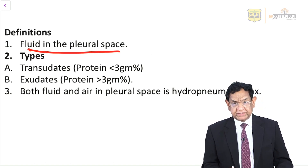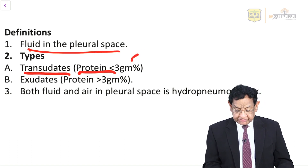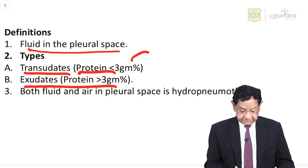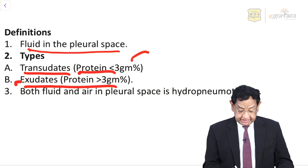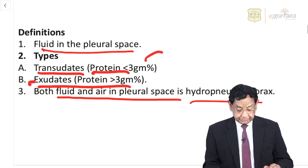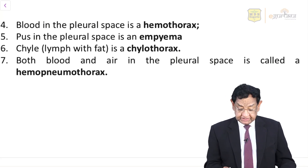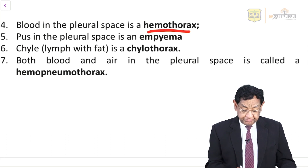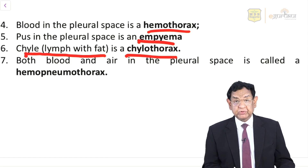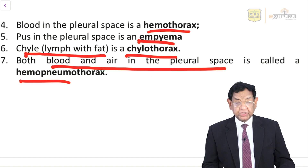We broadly classify this into two types. One is transudate, when the amount of protein in the pleural fluid is less than 3 gram percent. But if the amount of protein is more than 3 gram percent, then we call it exudate. Sometimes there can be both fluid and air in the pleural space — we call that hydropneumothorax. If blood is there, we call it hemothorax. If pus is there, we call it empyema. If chyle — that is lymph with fat — we call it chylothorax. When both blood and air are in the pleural space, we call it hemopneumothorax.